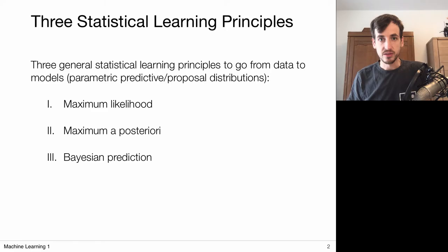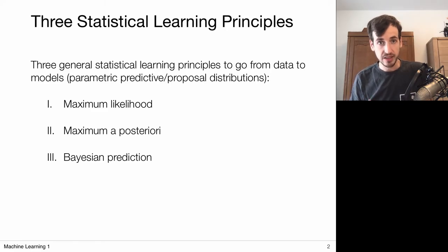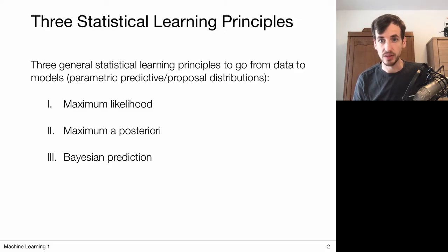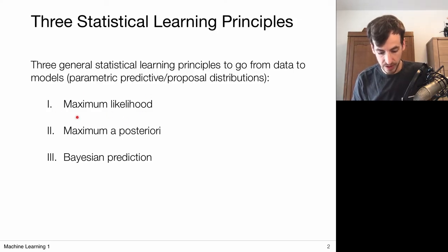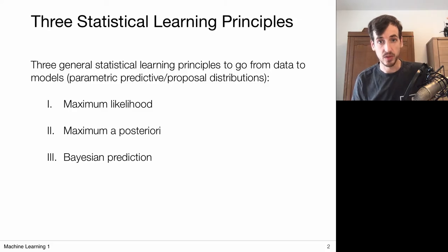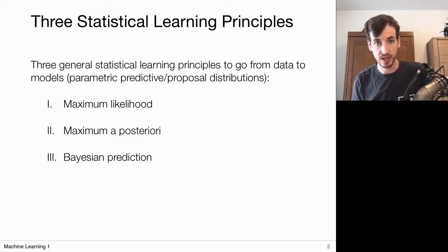In the first two lectures, three principles for probabilistic learning were discussed. We defined optimality criteria for when we consider a probabilistic model to be appropriate. It was either the model that gave the most likely explanation of the data, leading to the maximum likelihood principle, or we selected the model that was most probable given the data.